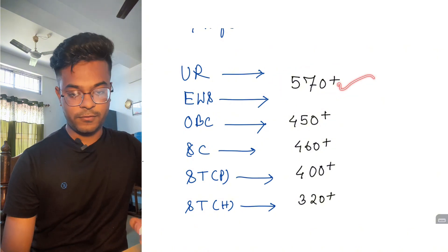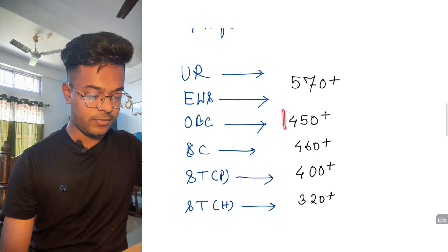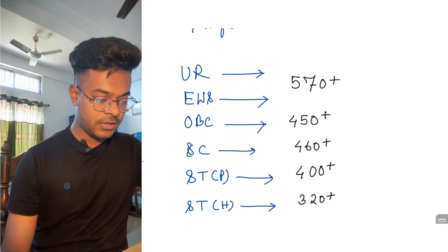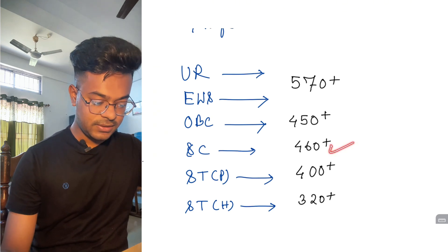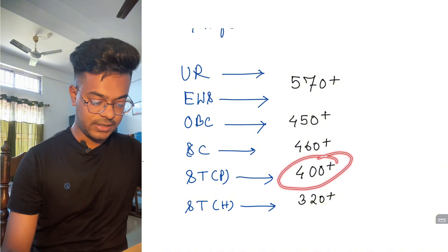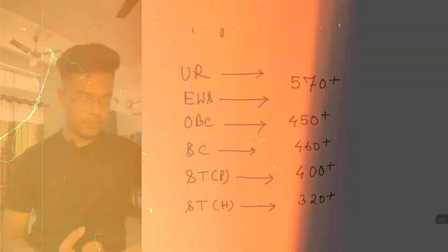If you are from EWS category, then try to score above 450 marks. If SC category, then try to score above 460. ST plain 400, ST Hill 320.